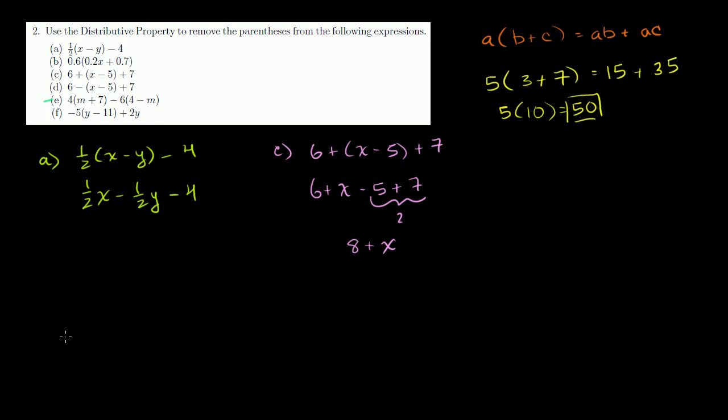Let's do e. We have 4 times m plus 7 minus 6 times 4 minus m. Let's do the distributive property. 4 times m is 4m plus 4 times 7 is 28. And then we could do it two ways. Let's do it this way first. So we could have minus 6 times 4 is 24. 6 times negative m is minus 6m.